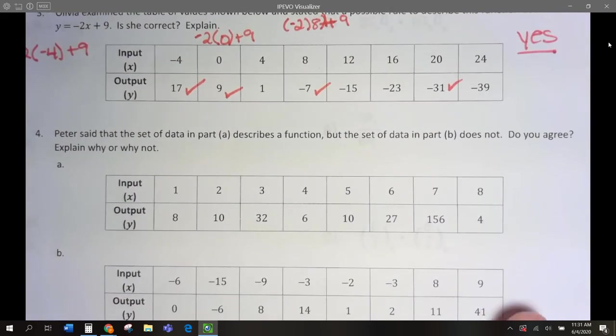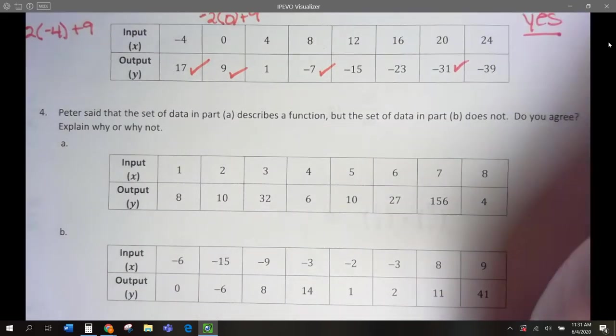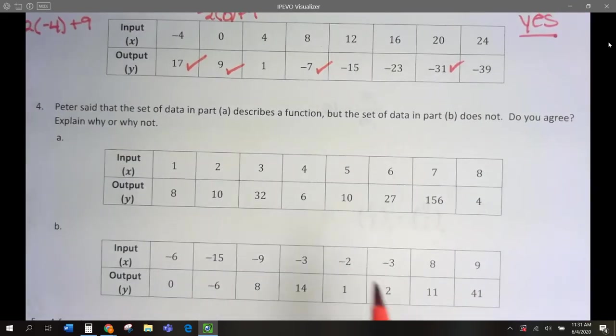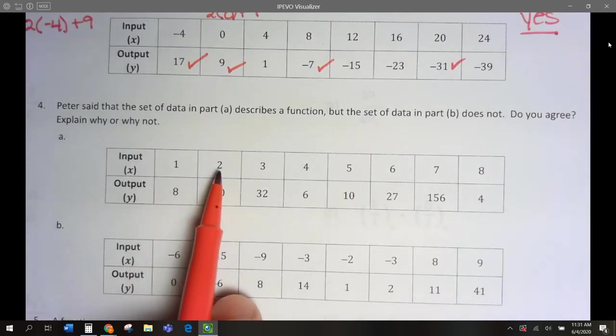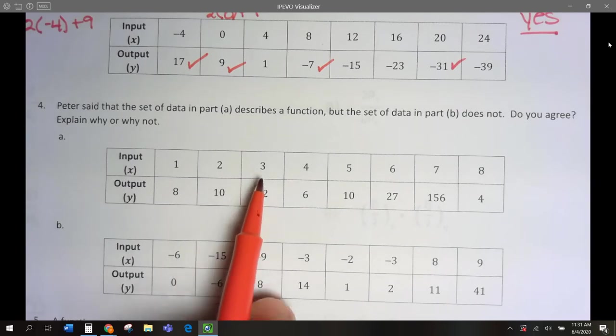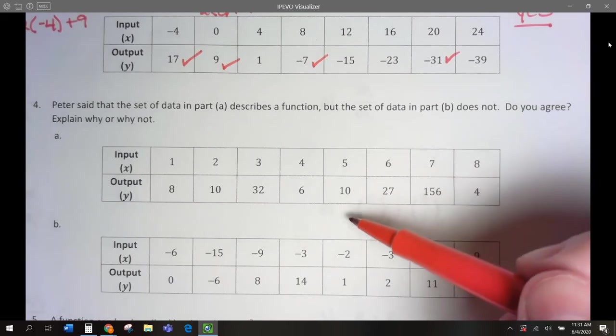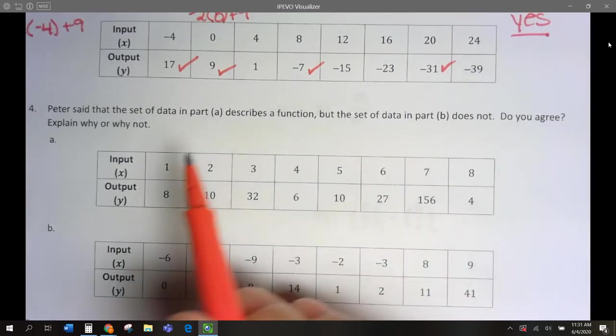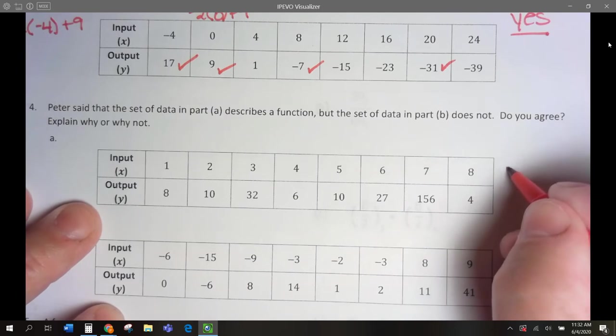Peter says that the data set in part A describes a function, but the data in part B does not. Do you agree? Is this a function? For every input, do we have just one output? Input 1, one output. Input 2, we just get 10. 3, we get 32. 4, we get 6. 5, 6, 7. So we have all our inputs just get one output. So yes, I agree. Yes, a function.